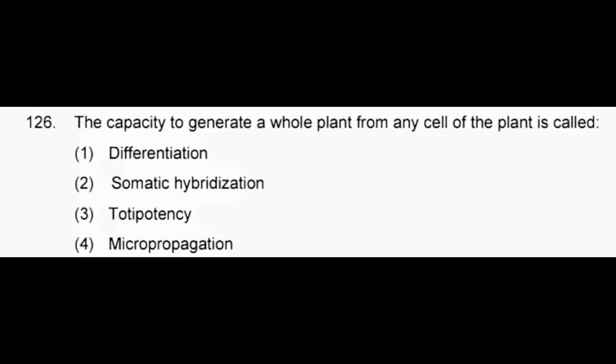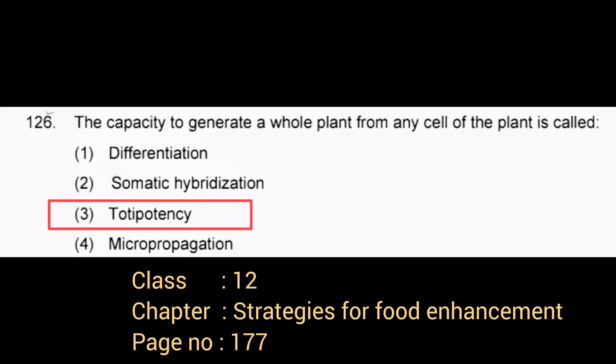The capacity to generate a whole plant from any cell of the plant is called — correct answer: option 3, totipotency.